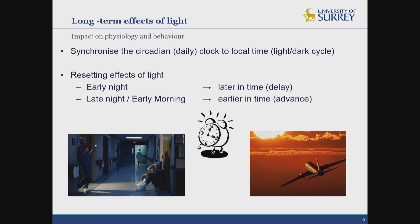In the long term, one of the most important effects of light is its ability to synchronise our circadian clock — the clock in our brain that drives 24-hour rhythms in physiology and behaviour. It's really important that this clock is synchronised to local time, so the local light-dark cycle.